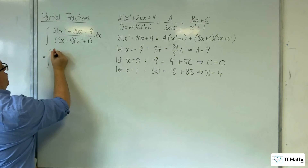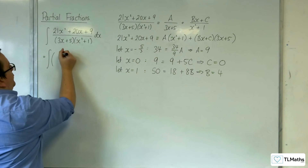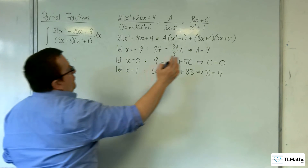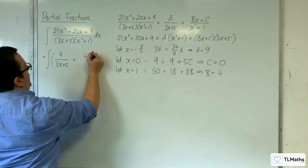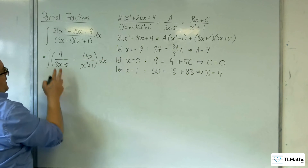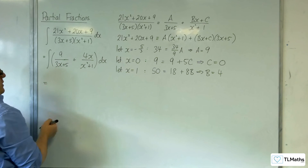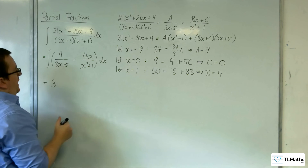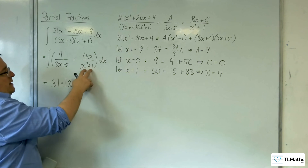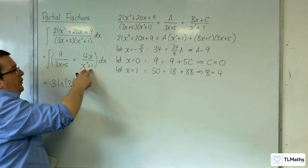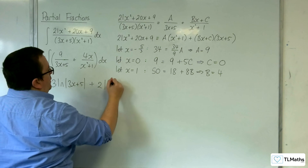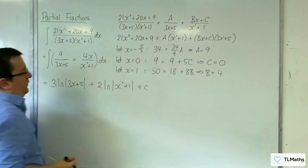So we have the integral of 9 over 3x plus 5 plus 4x over x squared plus 1 dx. For the first term, the denominator differentiates to 3 and we've got 9 on top, so it's 3 times the natural log of 3x plus 5. For the second term, x squared plus 1 differentiates to 2x, and we've got 4x in the numerator, so it's 2 times the natural log of x squared plus 1, plus a constant c.